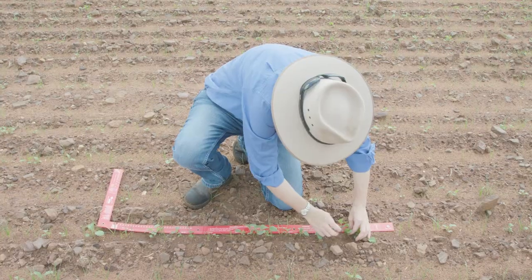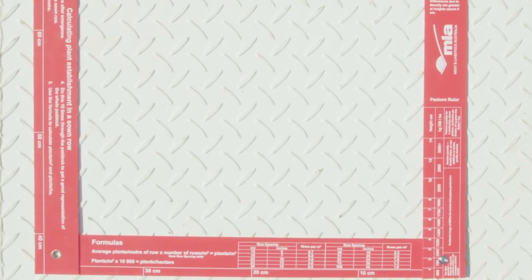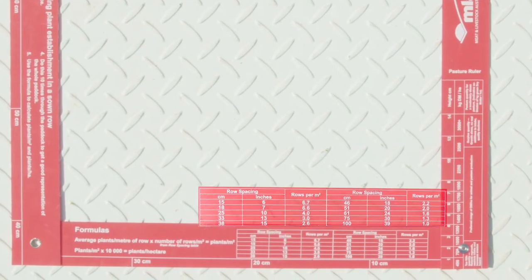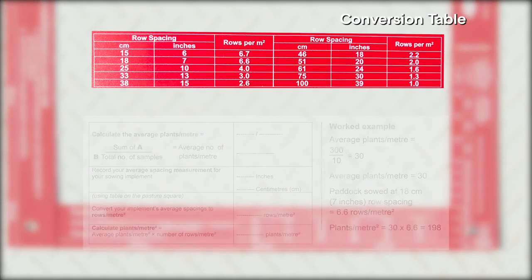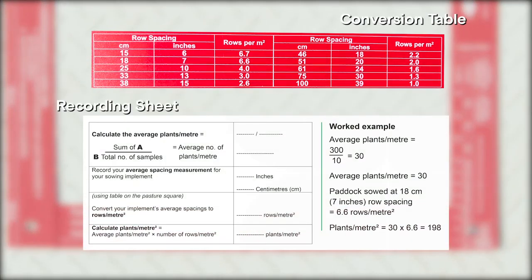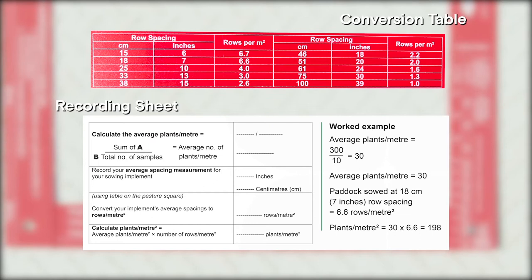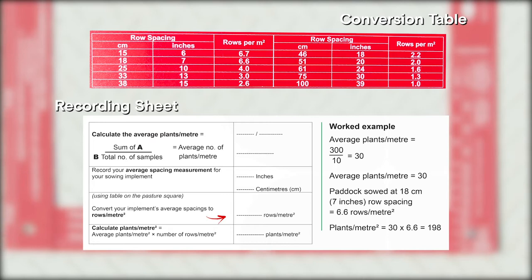Using the conversion table on the LLS Pasture Square, align your row spacings in either centimetres or inches to your sown implement. Use this conversion table to convert your row spacing measurements for your own equipment to rows per metre squared.